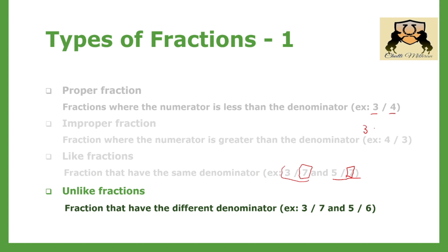Unlike fractions: fractions that have different denominators are called unlike fractions. For instance, 3 by 7 and 5 by 6 are unlike fractions because 7 and 6 are not equal.